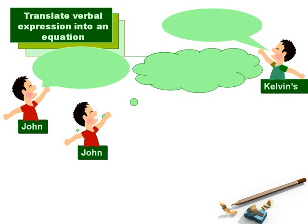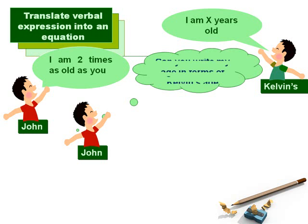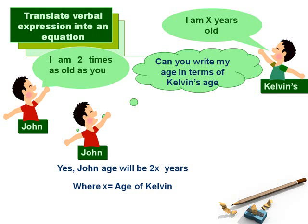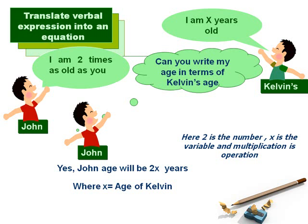Let's understand that by taking an example. Kelvin is x years old and John's age is twice the age of Kelvin. We need to tell what John's age would be in terms of Kelvin's age. As Kelvin is x years old and John is twice the age of Kelvin, John's age would be 2x. Here, 2 is a number, x is the variable, and multiplication is the operation.